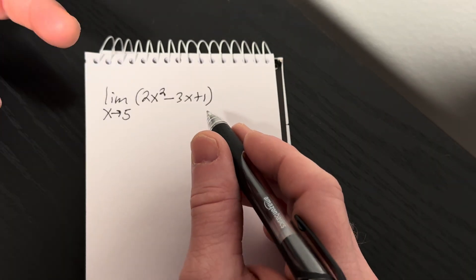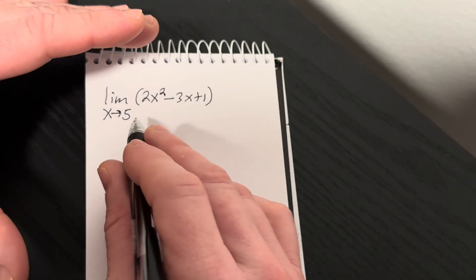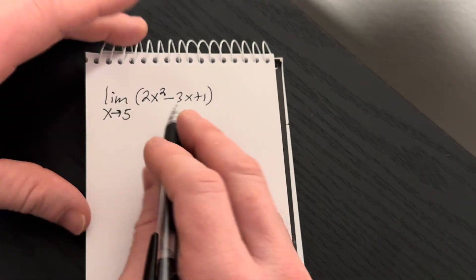You're not dividing by 0. There's nothing funny happening inside a square root. We're just basically multiplying and adding and subtracting. There's no issues.